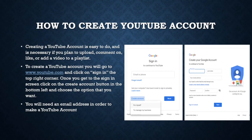Creating a YouTube account is easy to do and is necessary if you plan to upload, comment on, like, or add a video to a playlist. To create a YouTube account, you will go to www.youtube.com and click on 'Sign In' in the top right corner. Once you get to the sign-in screen, click on the 'Create Account' button in the bottom left and choose the option that you want. You will need an email address in order to make a YouTube account.